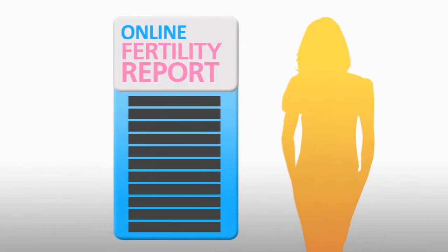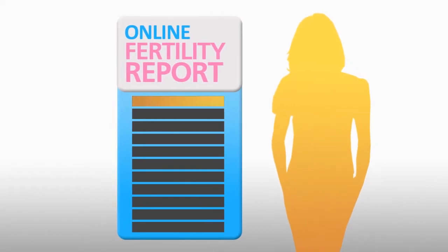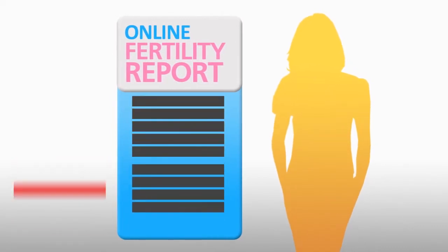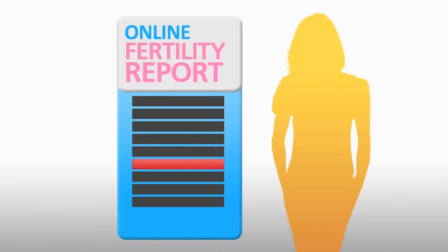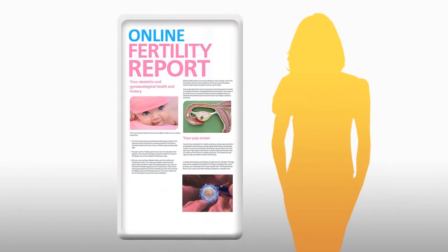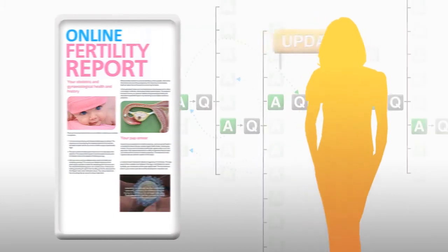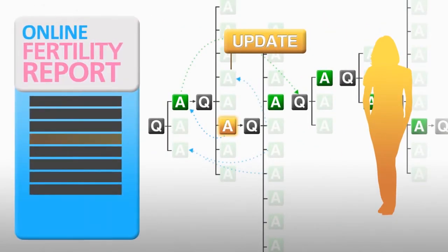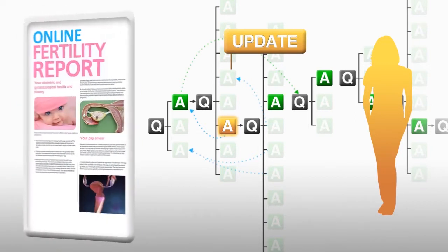At each step of the way, the Online Fertility Report cross-checks the relevance of all data that is being prepared for presentation to the consumer. The interactive report that is produced is unique to each person. It is dynamically created and interactive. When core data is updated with the latest evidence-based information, the consumer's report is also automatically updated.